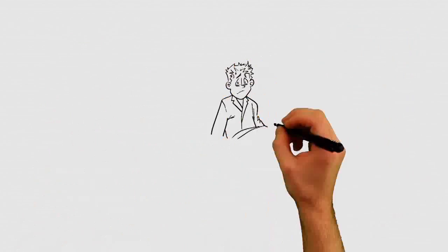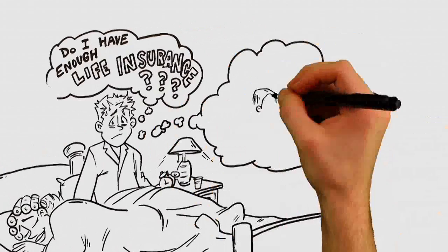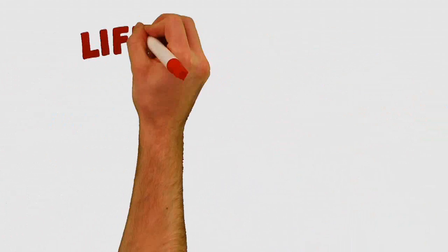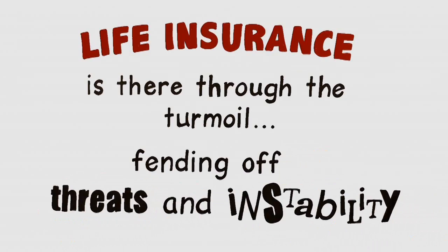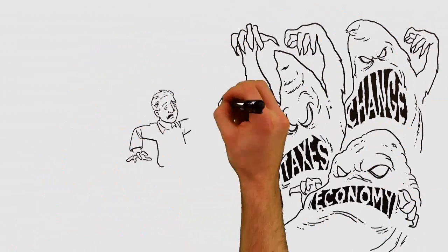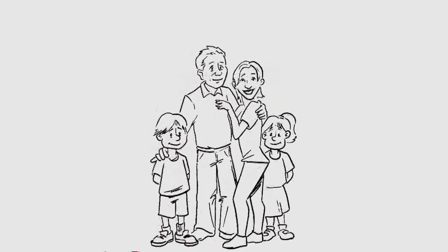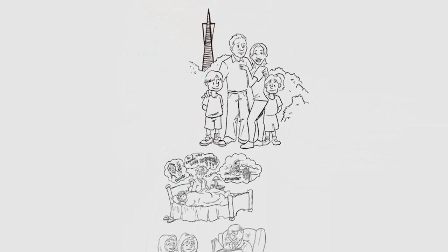Nobody wakes up in the morning wondering if they have enough life insurance. But they just might, given the understanding of what life insurance can do for them and their loved ones. Life insurance is there through the turmoil, fending off threats and instability. Our products take the risk out of life. They provide the very certainty consumers need—guarantees, flexibility, and control. And more importantly, peace of mind. Together, we can transform tomorrow.